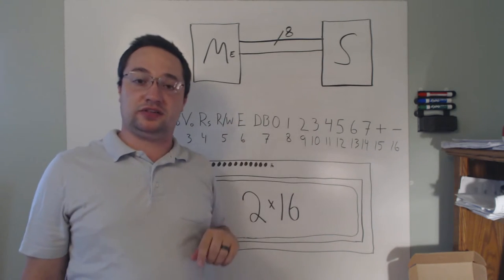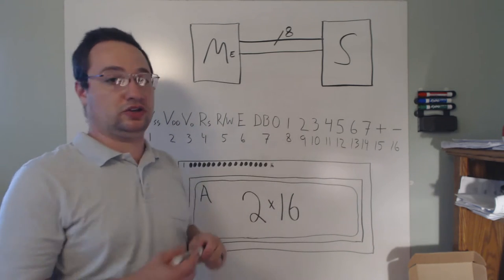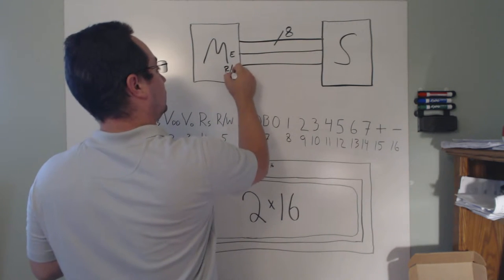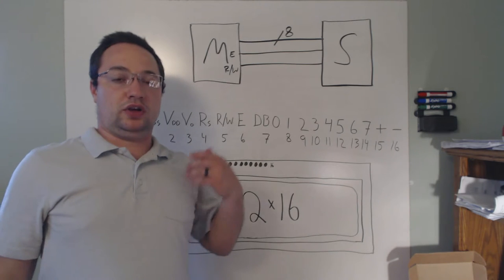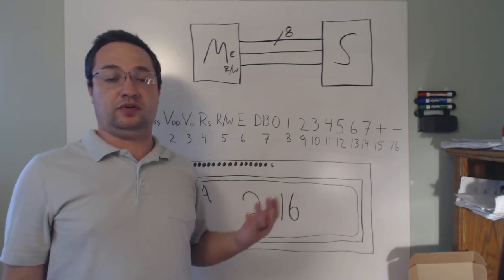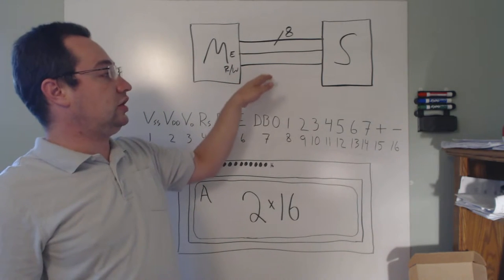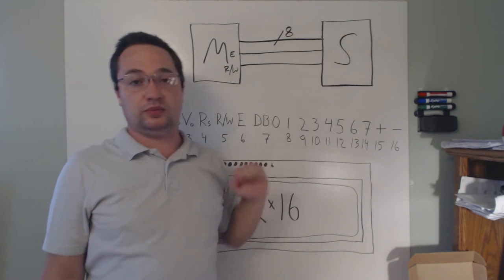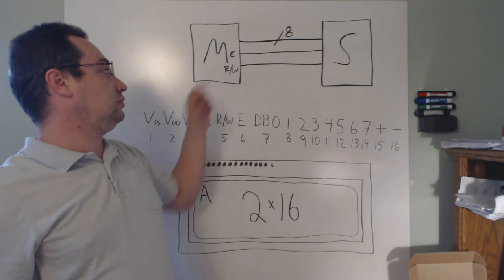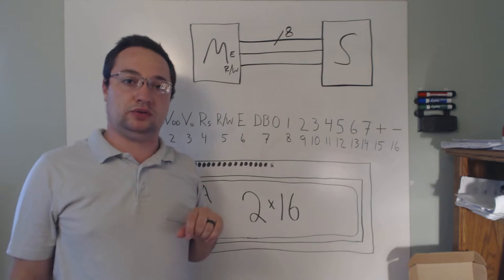With that setup you can only send data in one direction, so to get bi-directional communication you also need a read/write line. For example, if the read/write line is held low, data is being written to the slave. If the read/write line goes high, the slave knows to get ready to send data back to the master.